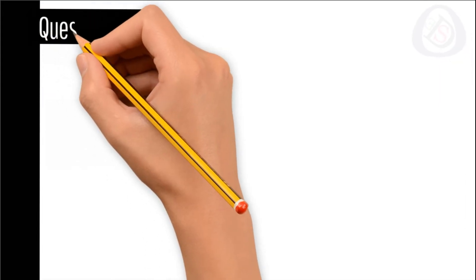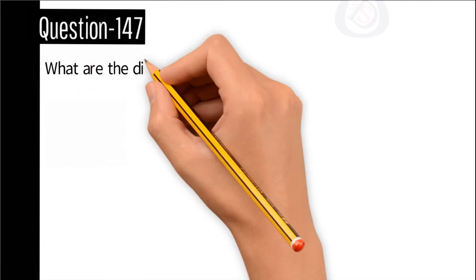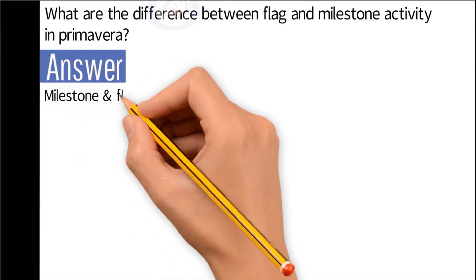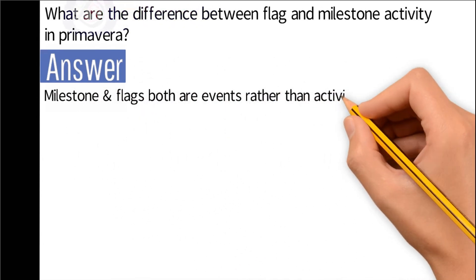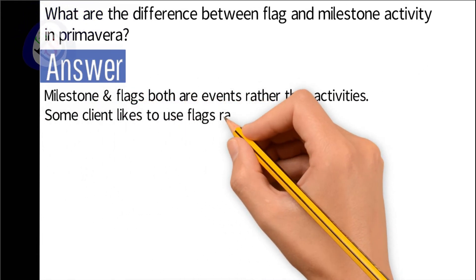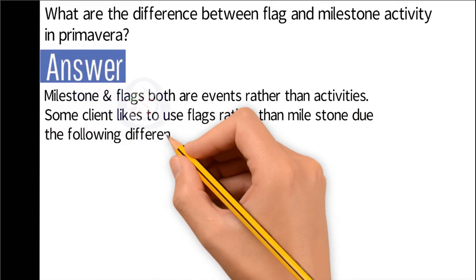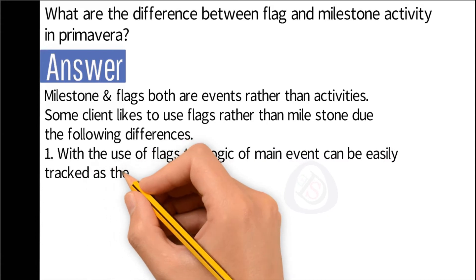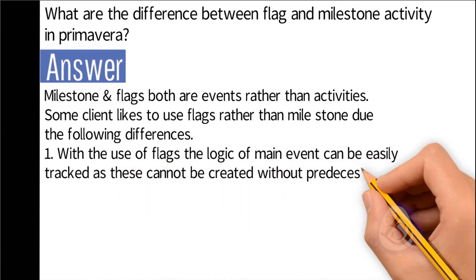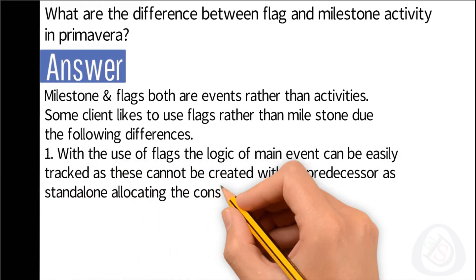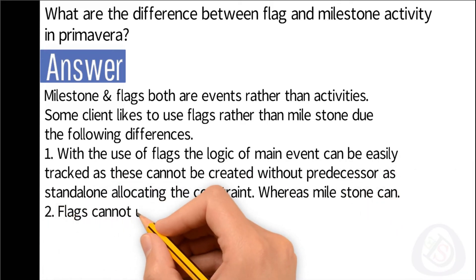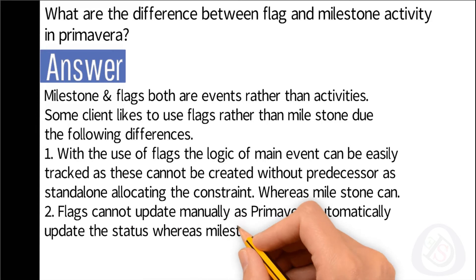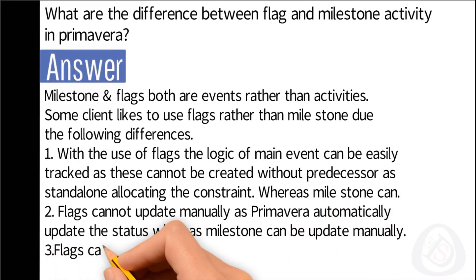Question number 147: What are the differences between flag and milestone activity in Primavera? Answer: Milestone and flags both are events rather than activities. Some clients like to use flags rather than milestone due to the following differences: One, with the use of flags the logic of main event can be easily tracked as these cannot be created without predecessor as standalone allocating the constraint, whereas milestone can. Two, flags cannot update manually as Primavera automatically updates the status, whereas milestone can be updated manually. Three, flags cannot be constrained, only driven by predecessor, whereas milestone can.